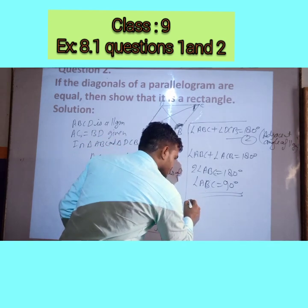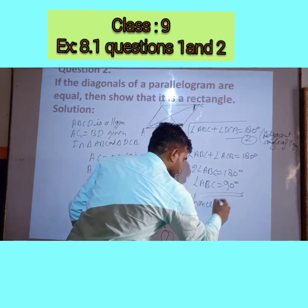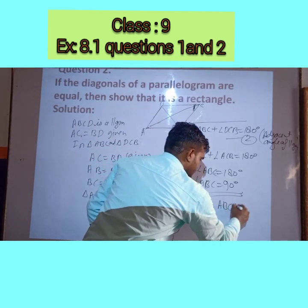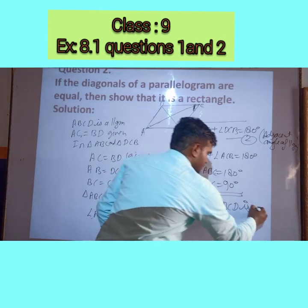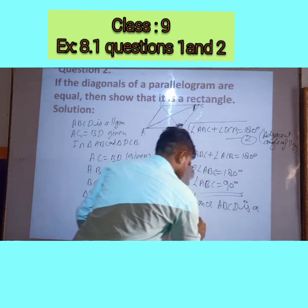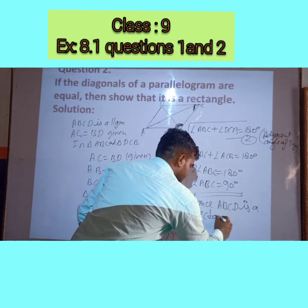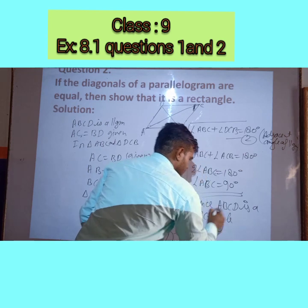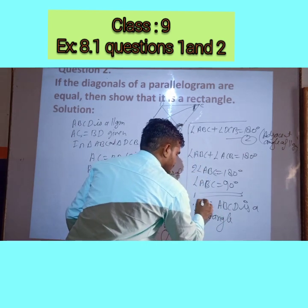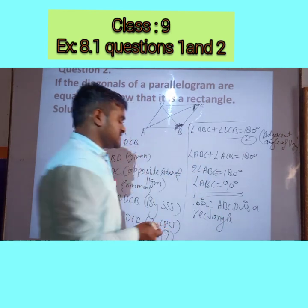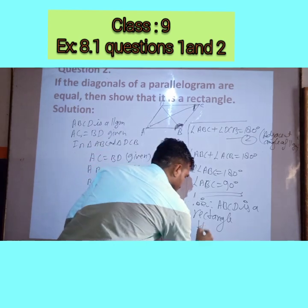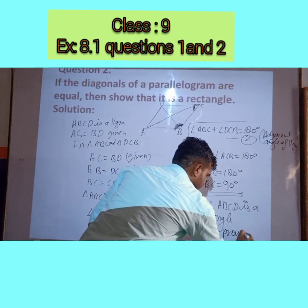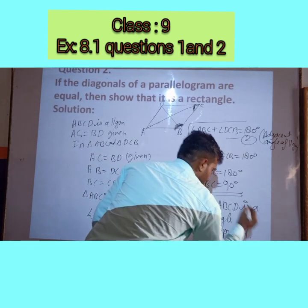If angle B is 90°, then from equation 2, angle C will also be 90°. And since opposite angles of a parallelogram are equal, angle A and angle D are also 90°. Therefore, ABCD is a rectangle. Hence proved.